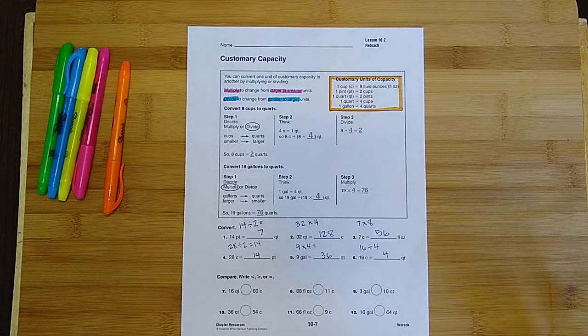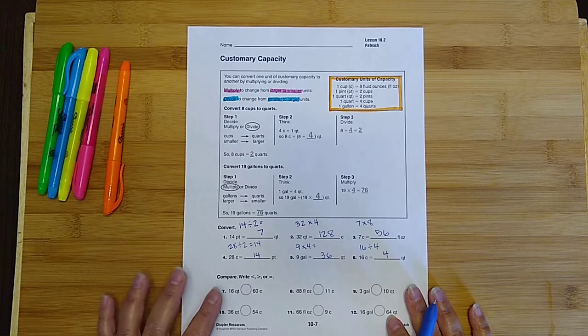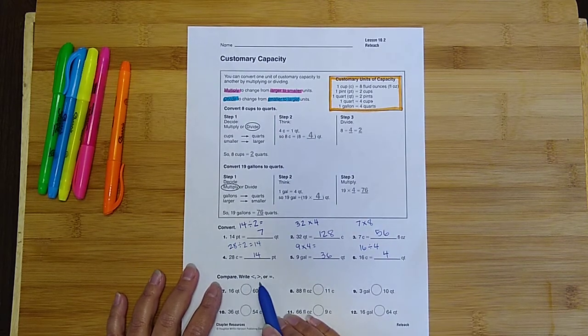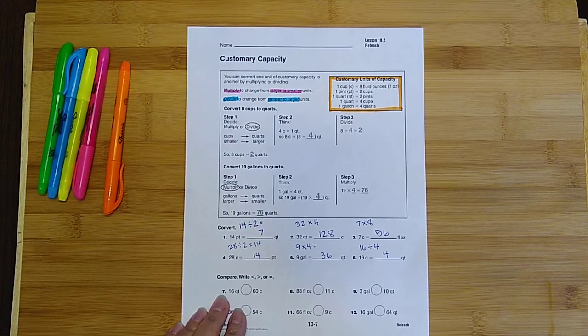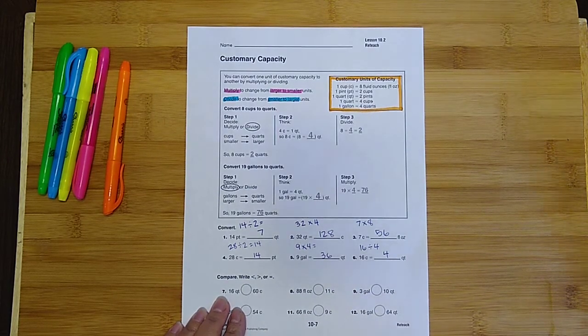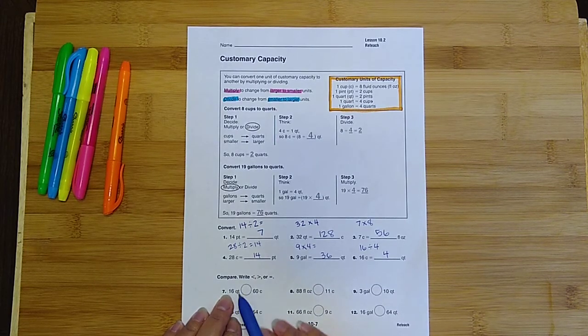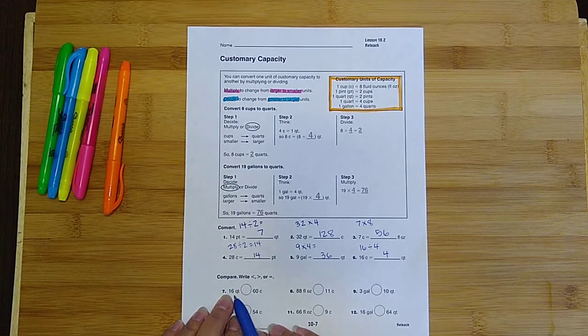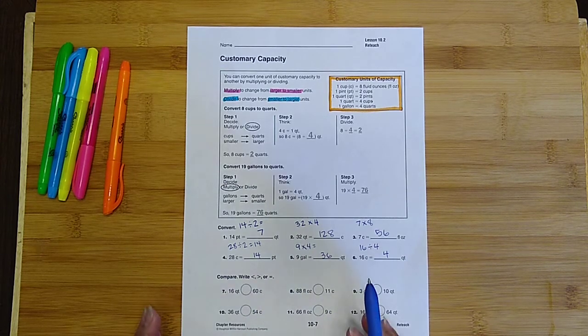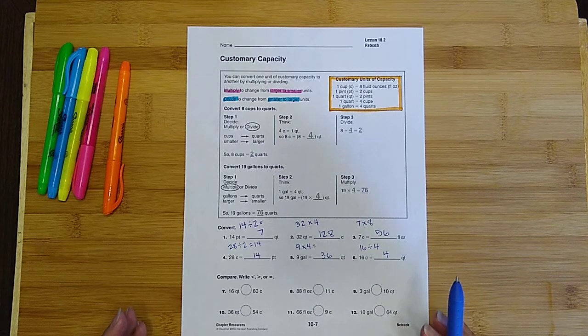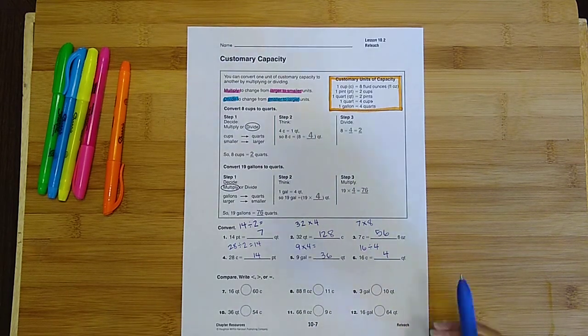Okay, we are ready to go ahead and go down here and compare. We're going to do either less than, greater than, or equal to. So on number seven, what I want to do is I want to convert the left side of the circle here. I want to convert it so that they are both in the measurement of cups. Then I can have and be able to compare them easily, because they have to be in the same units of measure.